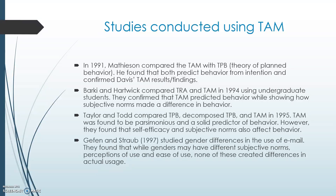The Technology Acceptance Model is a very young theory, having been presented first in 1986 as part of Davis's thesis and then confirmed in a study he performed with others in 1989. Most references to the Technology Acceptance Model refer to the 1989 study, when Davis and others published that behavioral intention is the major determinant of usage behavior. Additionally, that 1989 study found that attitude has less of an effect on behavior than previously thought.